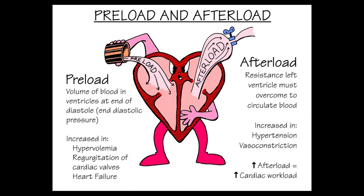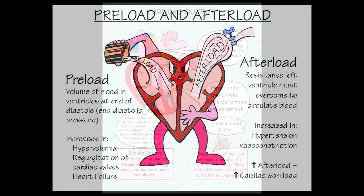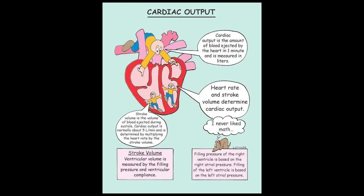Then there's the afterload on the heart, which is the resistance on blood exiting the heart to flow throughout the rest of the body. This blood flow is restricted by hypertension, constrictive vessels, plaque, etc. The last factor on stroke volume is contractility of the heart itself — if there's a defect in the heart muscle, the valves, or the blood supply to the heart tissue, the heart will not be able to fully contract and will pump less blood.